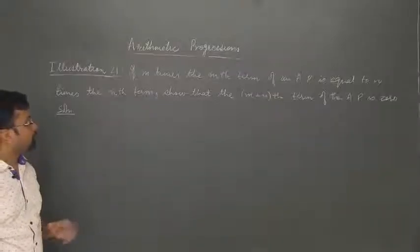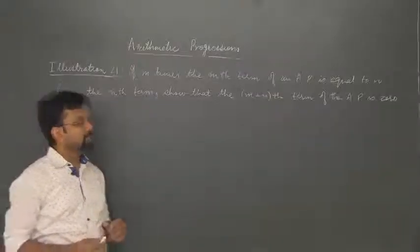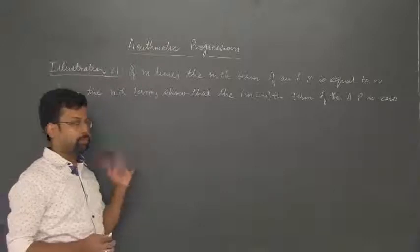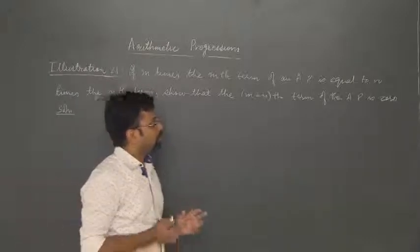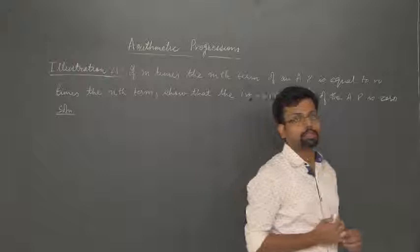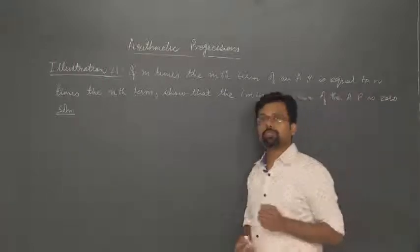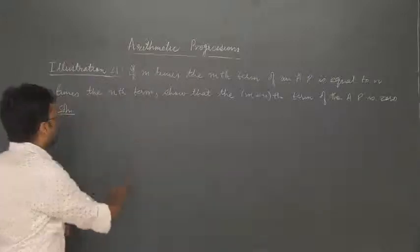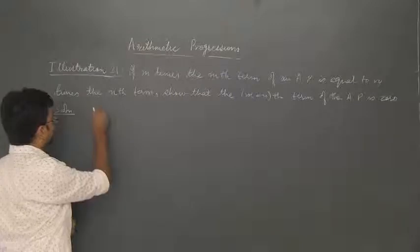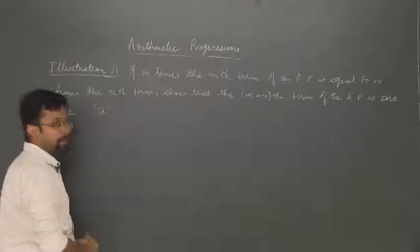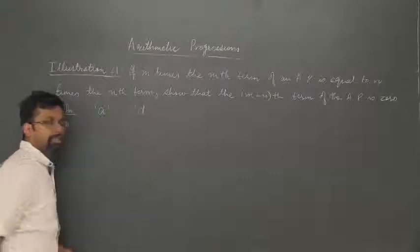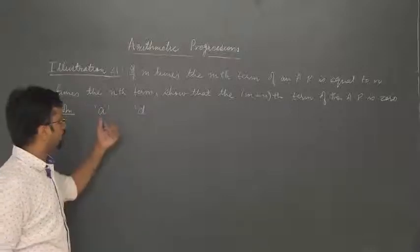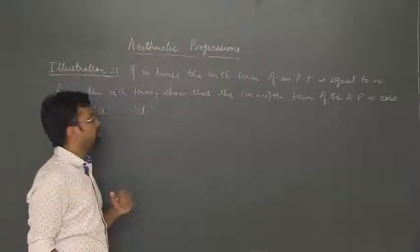In this question, it is given that if m times the mth term of an AP is equal to n times the nth term of the same AP, we have to show that the (m+n)th term of the given AP is equal to 0. This question has been asked in CBSE a few years back, so it is a very important question. Since the first term and common difference are not given, let us assume the first term is a and the common difference is d.